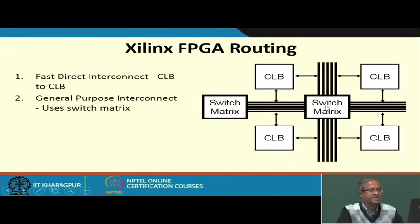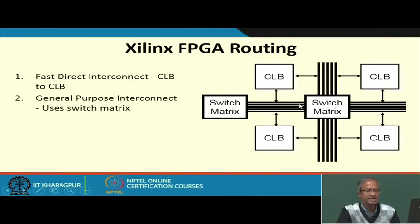The switch matrices are typically implemented using SRAM — by loading some bits in a memory you can switch on or switch off the connections. There is another technology called anti-fuse, where by passing a high current you can either connect or disconnect a line. Some FPGA manufacturers also use anti-fuse technology.